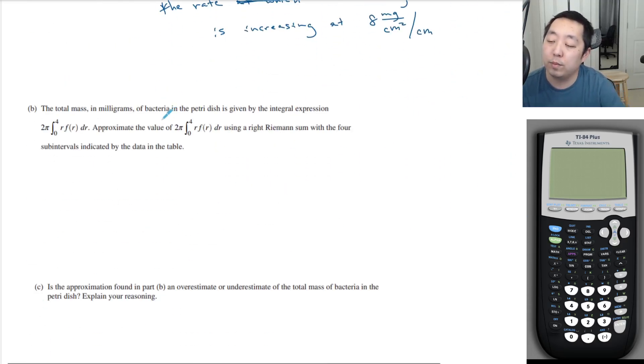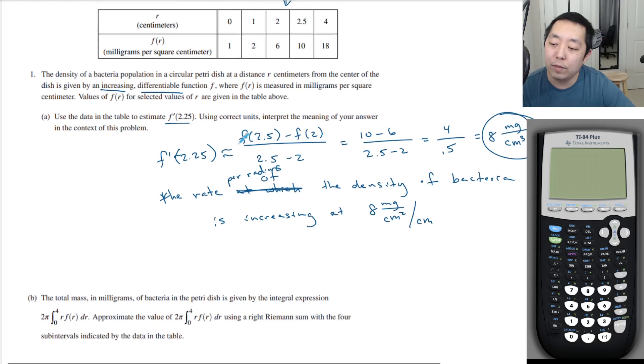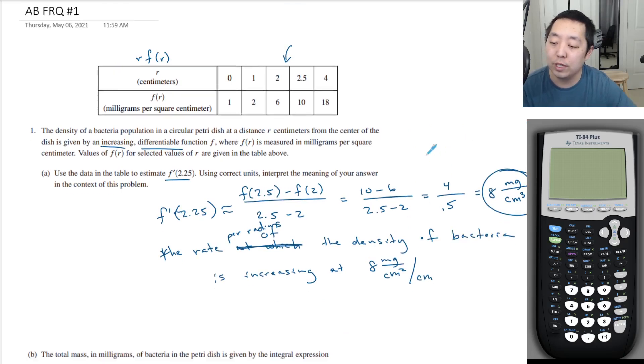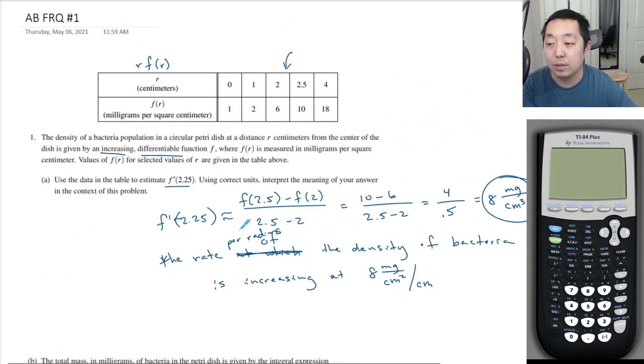Total mass of the milligrams of bacteria of the petri dish given by the integral expression, 2 pi integral 0 to 4 r f r dr. Approximate the value using this. Oh, this is interesting! So, we have to figure out what r times f of r is, and we have to create our own entries, because you're doing the area of not f of r, but r times f of r. But you can do this from the table, it's just, you know, I've never seen them do this.